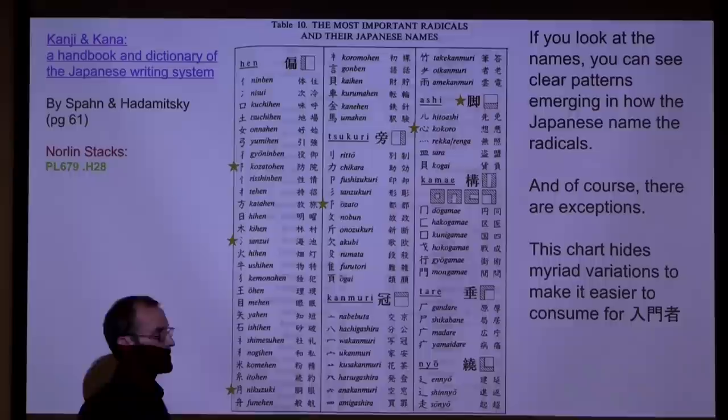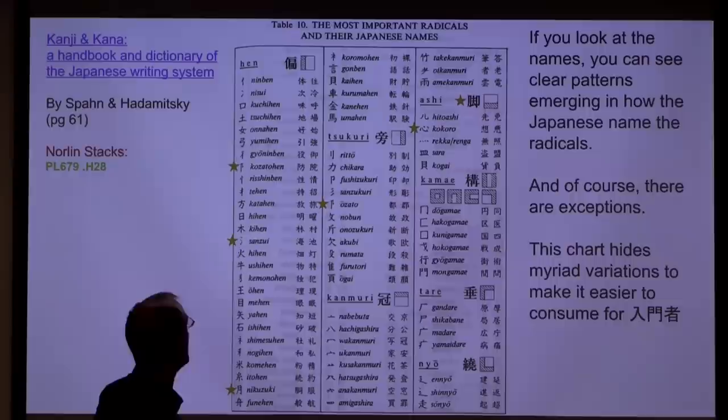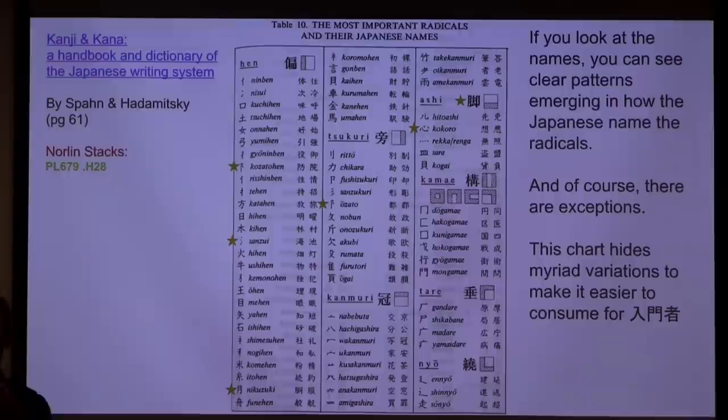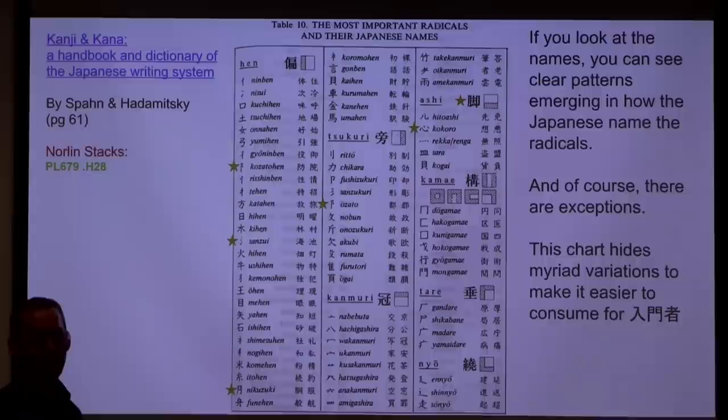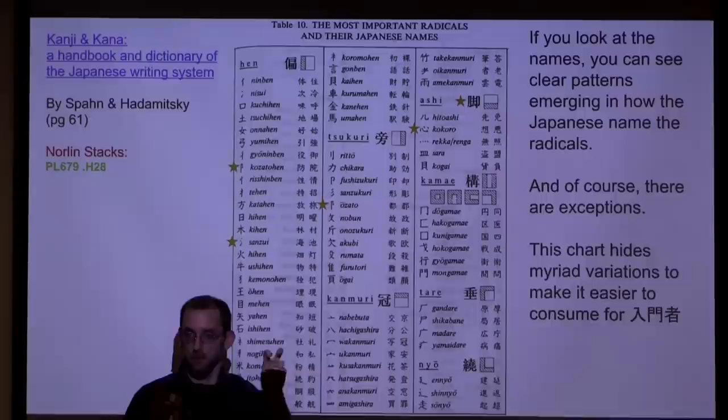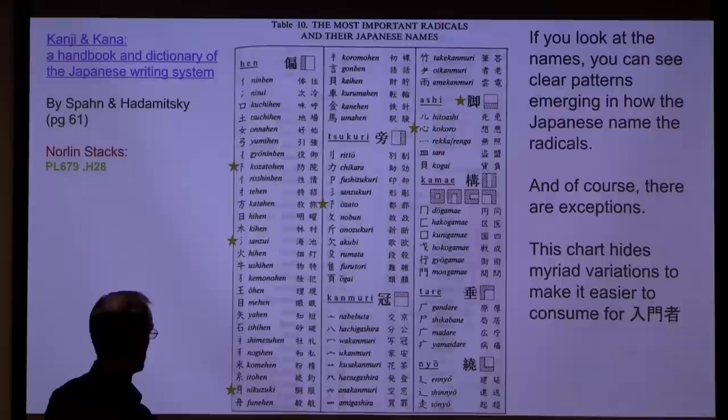Living in a culture where you constantly read this, the familiarity makes it easier. Notice 'kozatohen' and 'ozato' look identical — what makes them different is their location: 'kozatohen' is on the leftmost side and 'ozato' is on the rightmost side. They're variants — when you uncompress them, they actually look totally different from each other. One only ever appears on the left, and one only ever appears on the right. And here's 'sanzui' again — its partner is 'nisui.'